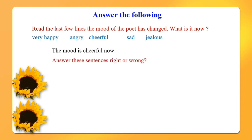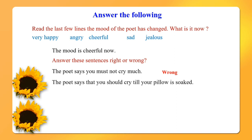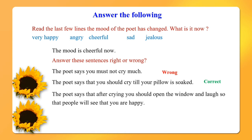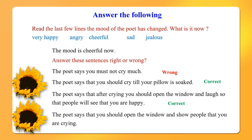Right or wrong: The poet says you must not cry much — wrong, the poet actually says we should cry a lot. The poet says you should cry till your pillow is soaked — correct. The poet says after crying you should open the window and laugh so people see you are happy — correct. The poet says you should open the window and show people that you are crying — wrong, the poet never said this.